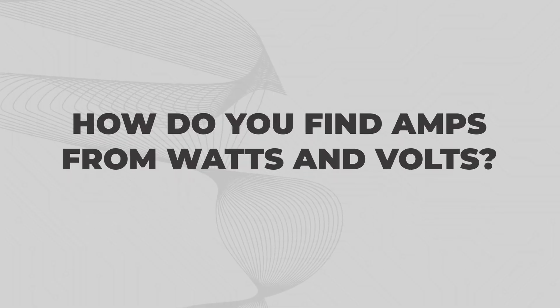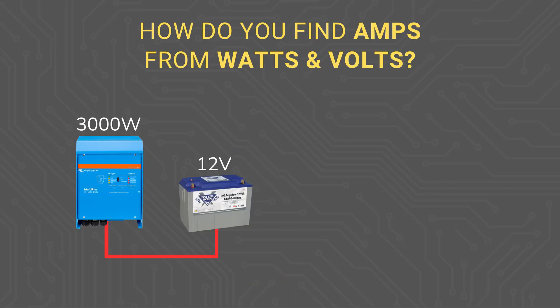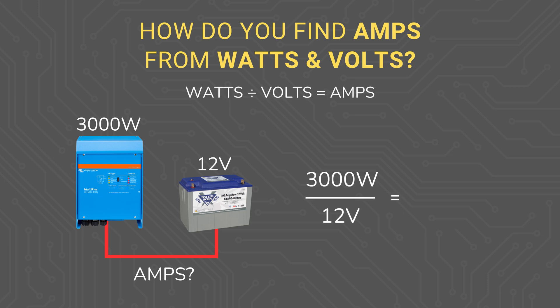How do you find amps from watts and volts? Let's say that you have a 3000 watt inverter powered from a 12 volt battery bank and want to know how many amps you can anticipate flowing through the wire from the battery to the inverter to size that wire. For that, you would take 3000 watts divided by 12 volts, which gives you 250 amps.